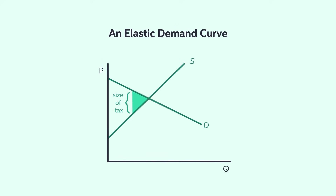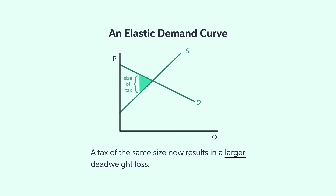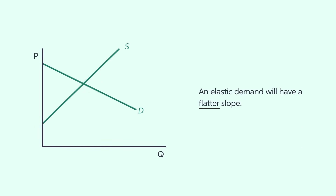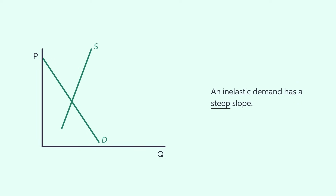In this graph, the supply curve and the size of the tax are identical to the last graph. The demand curve, though, is now flatter to represent an elastic demand. As before, a tax of the same size now results in a larger deadweight loss. When looking at the deadweight loss of taxation due to the demand elasticity, remember to plot demand curves with correct slopes. An elastic demand will have a flatter slope, while an inelastic demand has a steep slope.